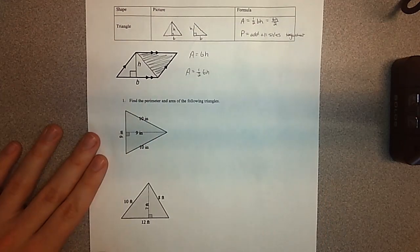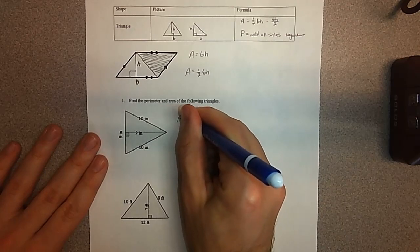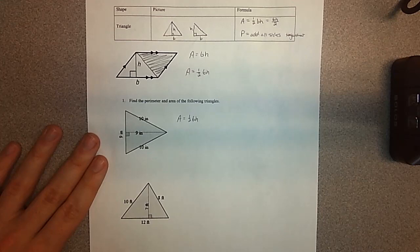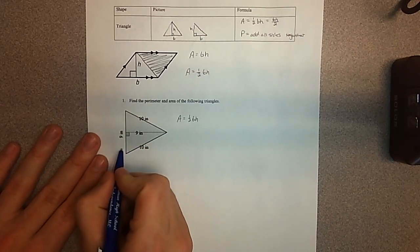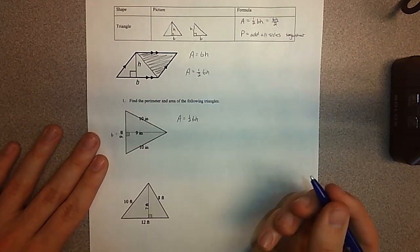So down here it says find the perimeter and area of the following triangles. Area equals one half base times height. I'm given this height right here, I know it's the height because it forms a right angle with this side, which is going to be my base.